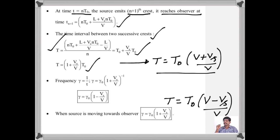We know that the reciprocal of time period is the frequency. Converting using this, ν is the frequency of the sound or light as observed by the observer, and ν₀ is the frequency of the source. When the source moves away from the observer, we get ν = ν₀ · (1 − Vs/V). Similarly, when the source is moving towards the observer, T = T₀ · (V − Vs)/V, and taking the reciprocal, the frequency ν = ν₀ · (1 + Vs/V).